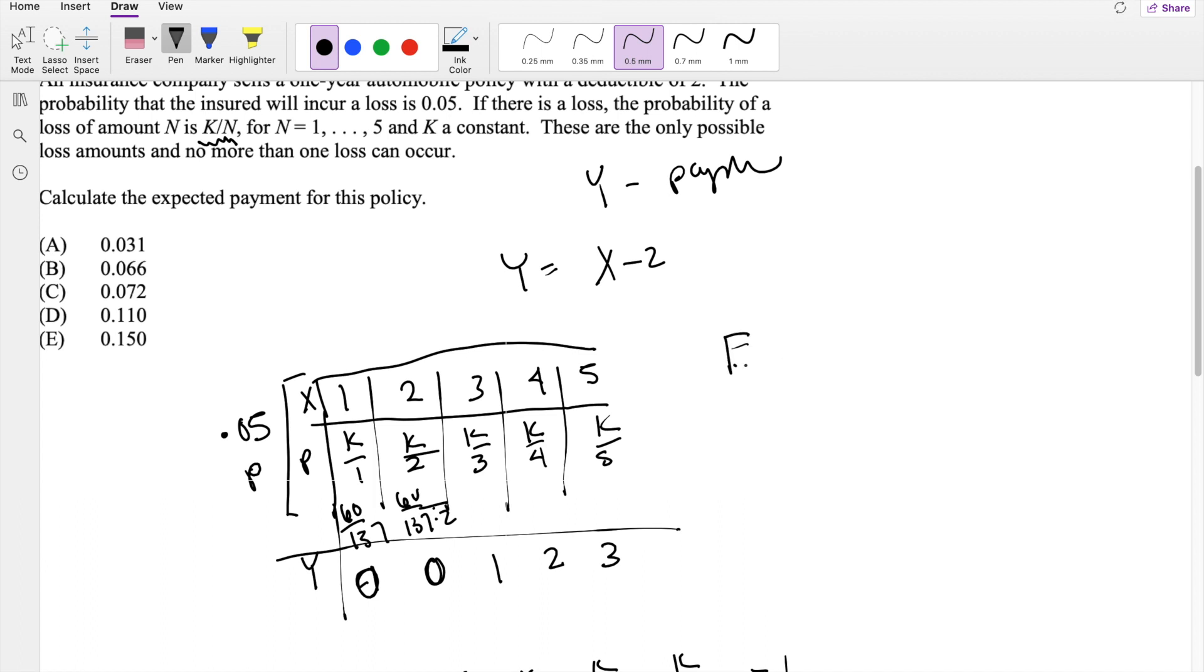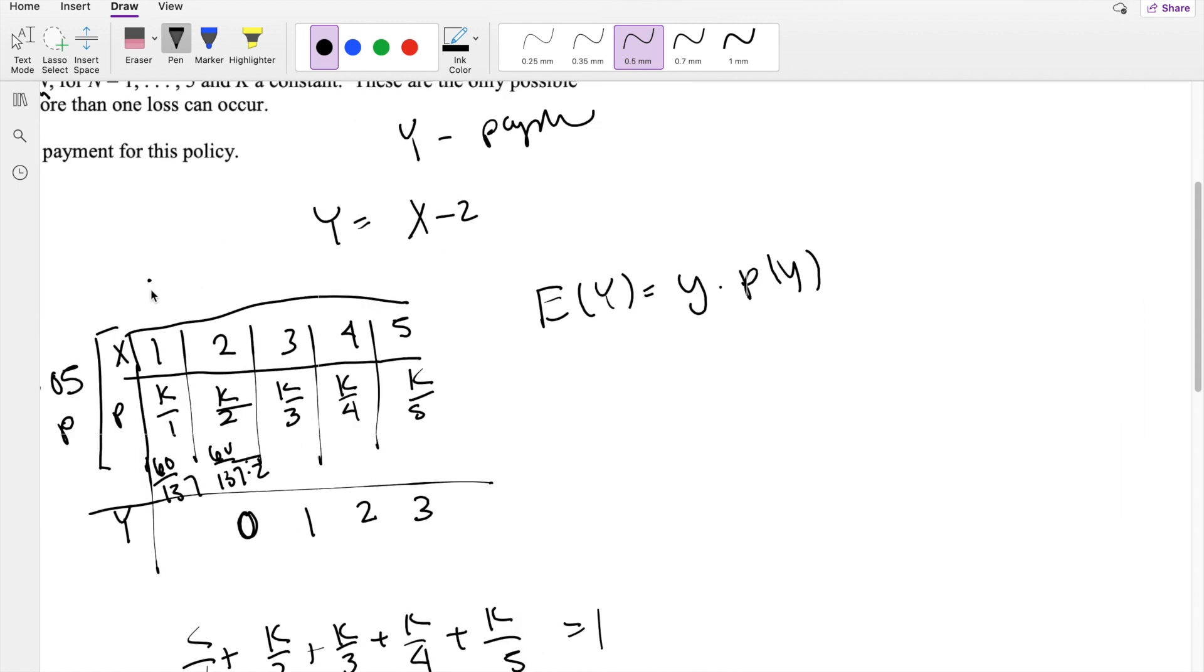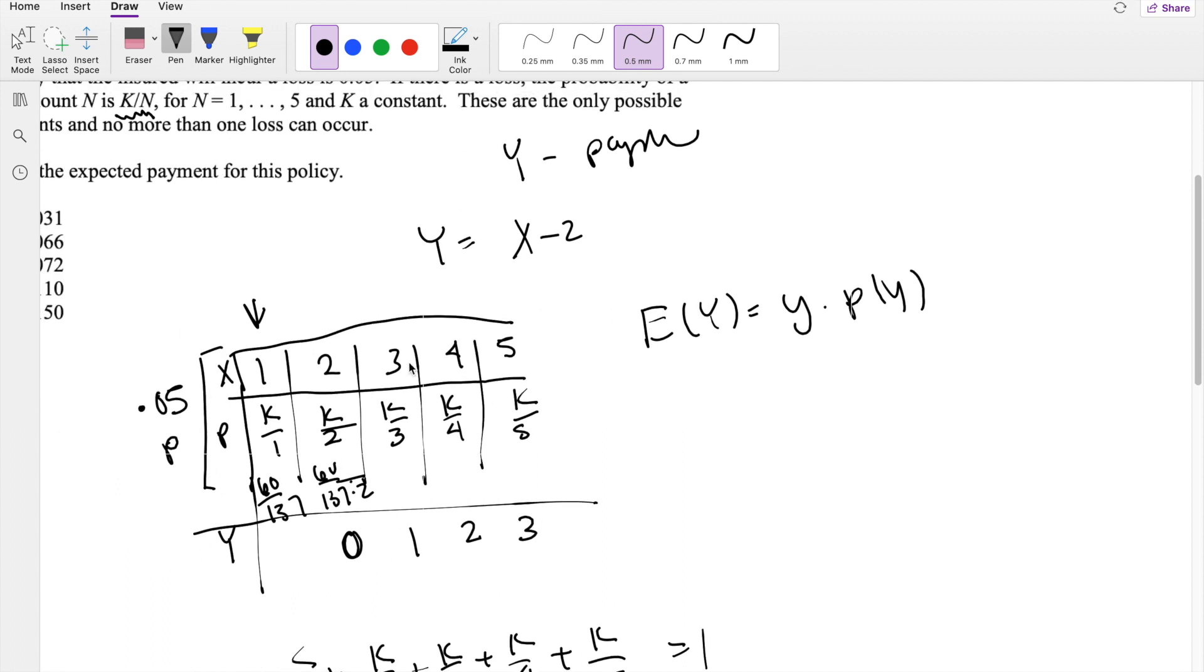These are expected values. We know expectation of Y is Y times the probability of Y. When you do 1 minus 2, it's technically negative 1. But think of it like this: if you have an accident that costs $1,000, less than the deductible, all the money comes out of the customer's pocket. So the insurance company pays 0. Same thing for 2. If loss is 2, the customer pays the whole thing. So this is 0 as well.